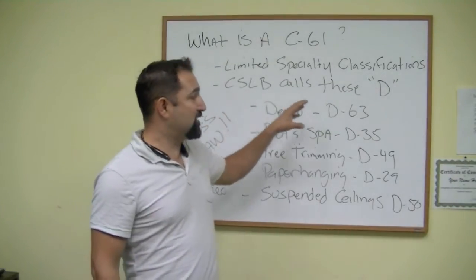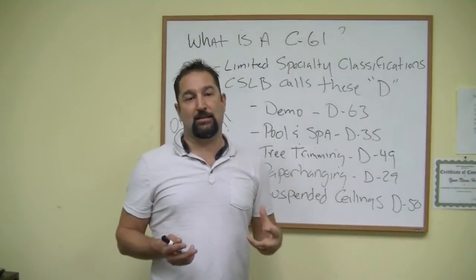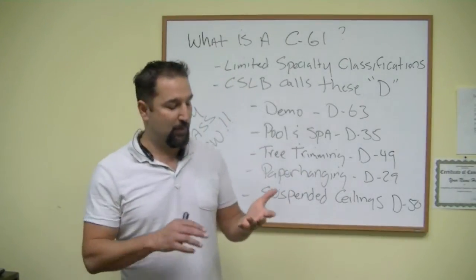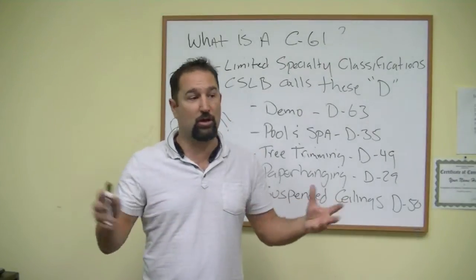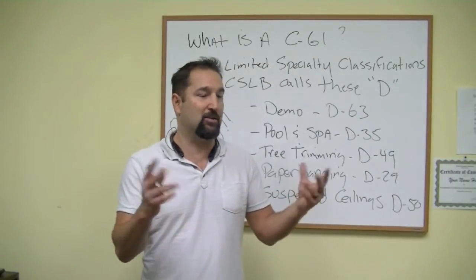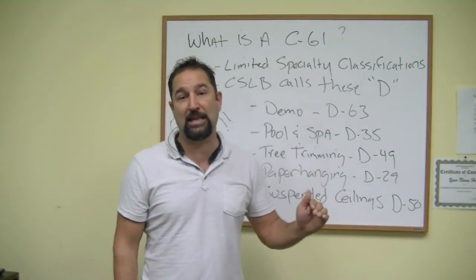Now the CSLB calls these the D licenses and some of you may not have ever heard of them. A lot of people, they've heard of the A license, you know, engineering. They heard of B, which is your general construction license. And then your specialty license like cabinets and all that kind of stuff, which fall in the C category.